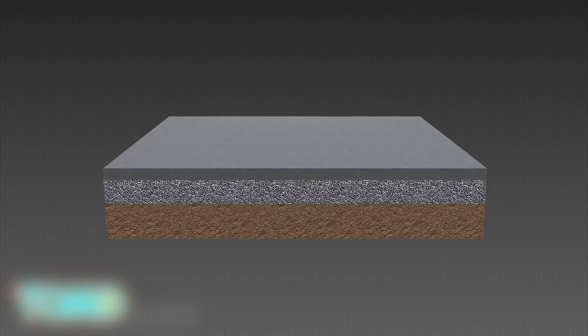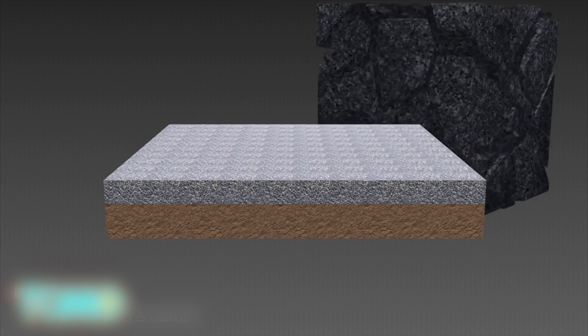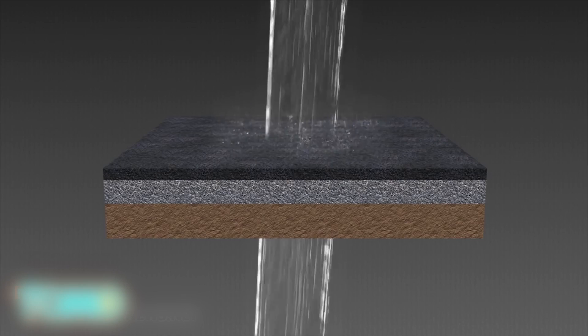Instead of being sand-based, topmix is made of no-fines concrete. Tiny pieces of crushed granite packed together that better allow water to pass through.